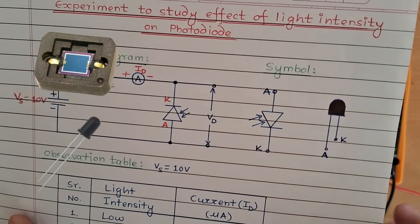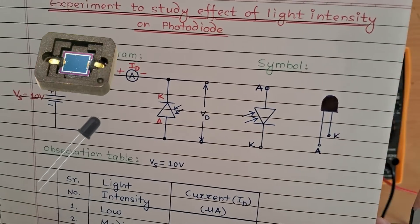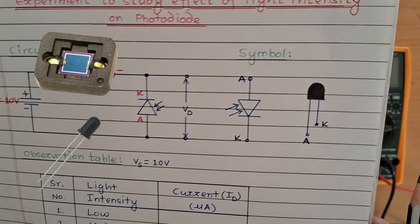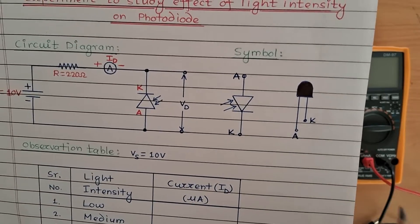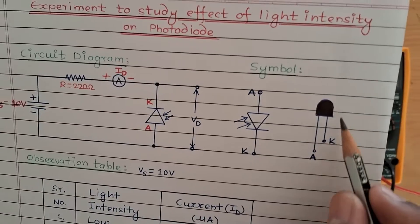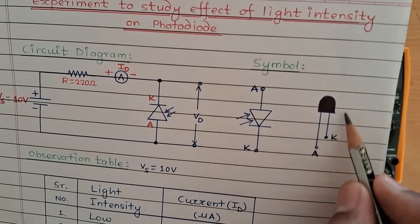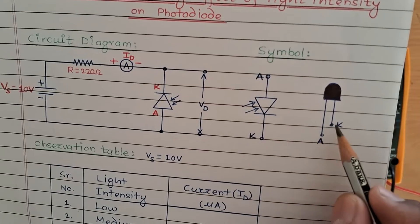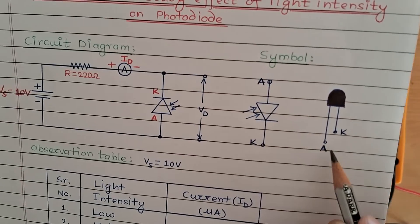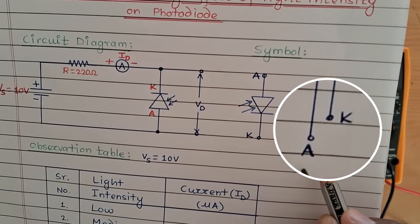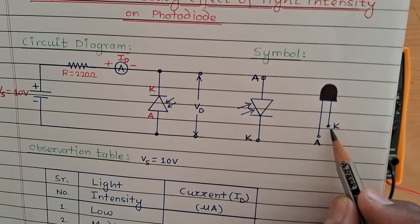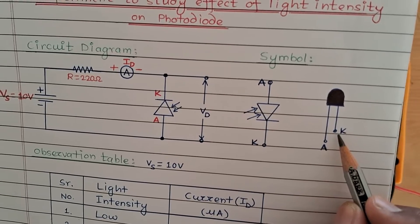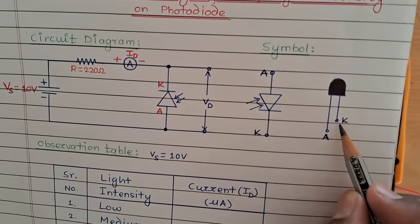Physically the diode will look like this. Generally it is dark in color, but nowadays many photodiodes are available which are completely transparent. If you have a dark-color photodiode, the longer lead will indicate the anode terminal and the shorter lead will indicate the cathode terminal.